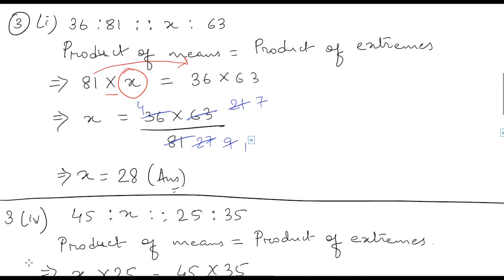In the means we have 81 and X, and in the extremes we have 63 and 36. So we can write 81 into X is equal to 36 into 63.